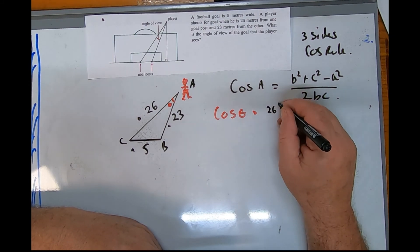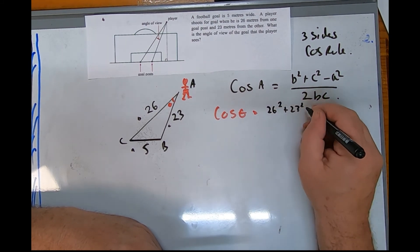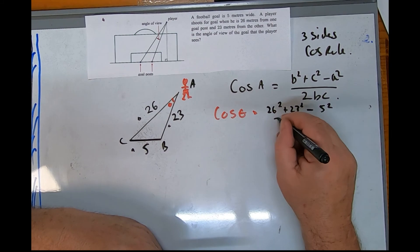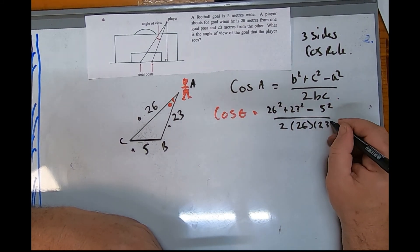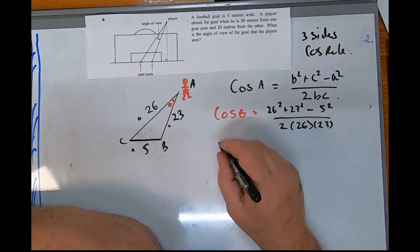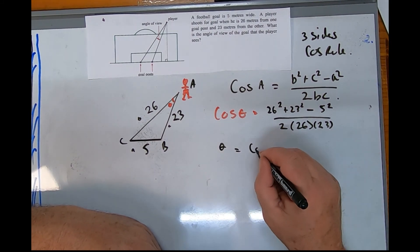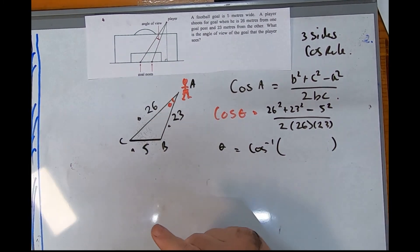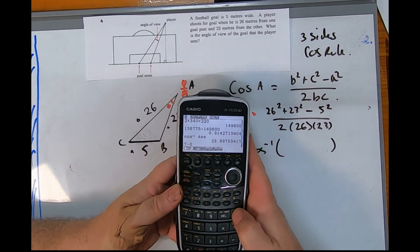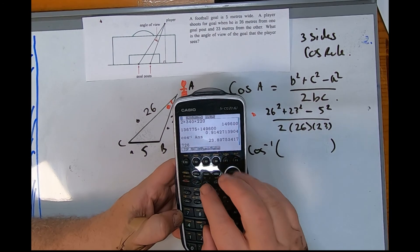26 squared plus 23 squared take 5 squared, 2 times 26 times 23. So that equals shift cos of what, two numbers back ladder. 26 squared...